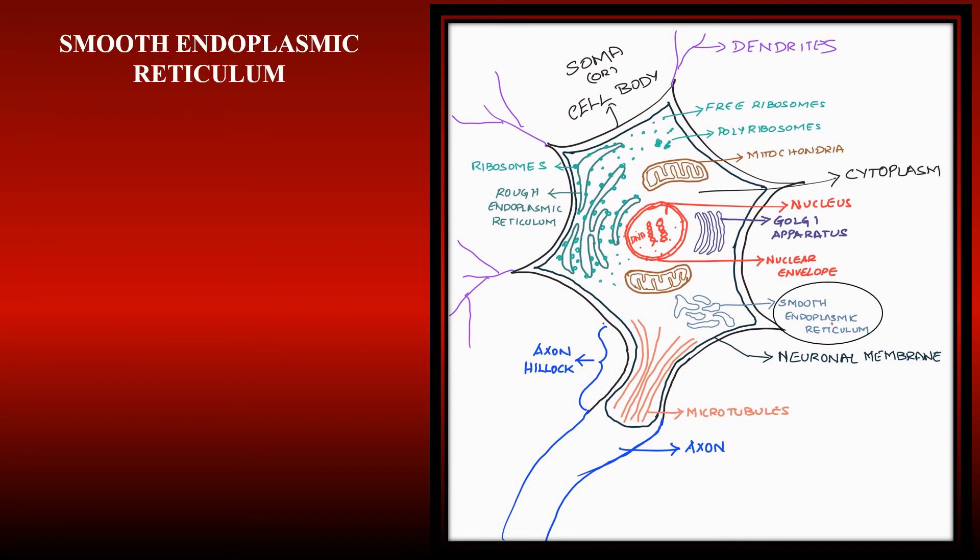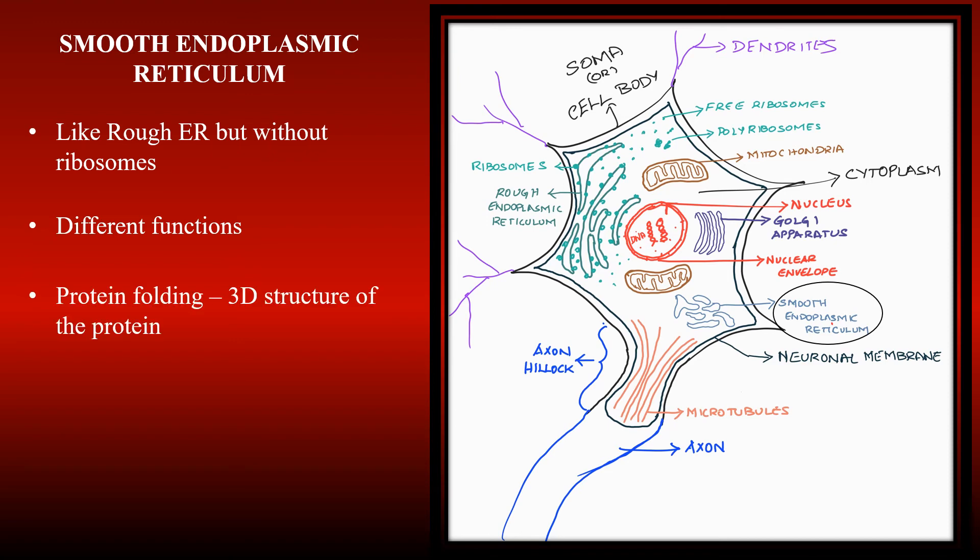In the cytoplasm, there are another stack of membranes like the rough endoplasmic reticulum, but without the presence of ribosomes. They are called the smooth endoplasmic reticulum. They have different functions depending on their location. For example, some are involved in protein folding and forming the protein's 3D structure. Some are involved in the regulation of internal concentrations of substances like calcium.